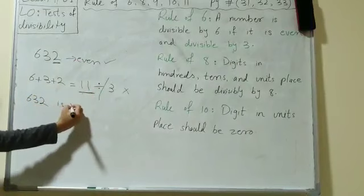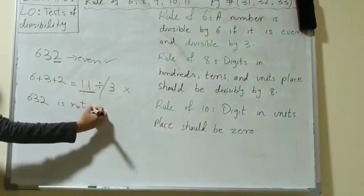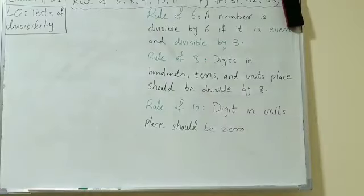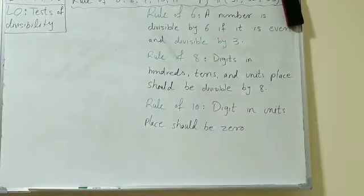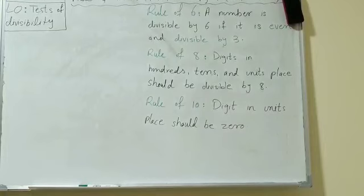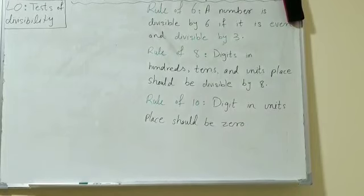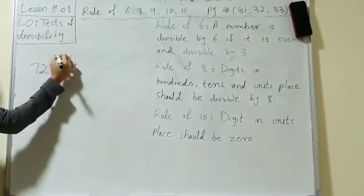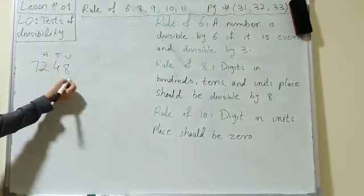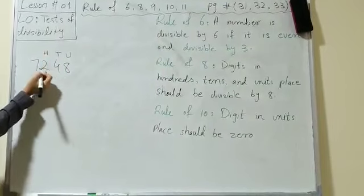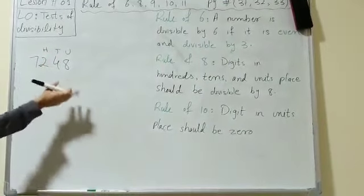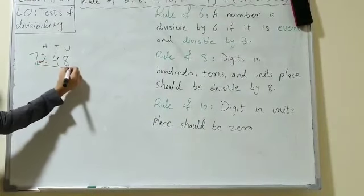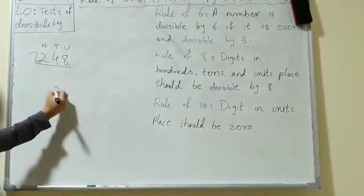Next is the rule of 8: the digits in the hundreds, tens, and units places should be divisible by 8. These last three places are what we check. If they are divisible by 8, then the whole number is divisible by 8. Let's check if 248 is divisible by 8.